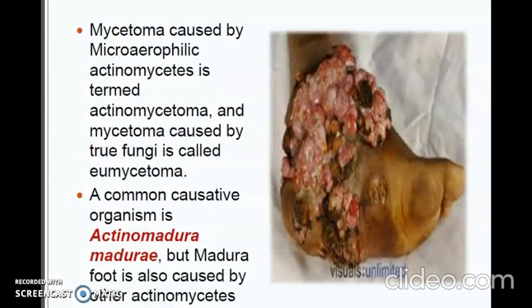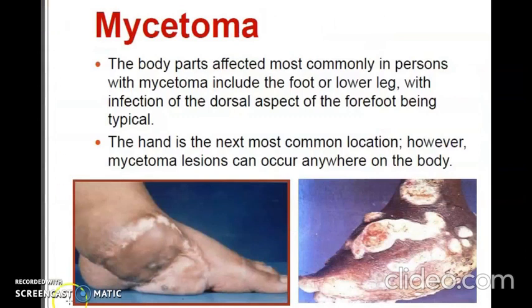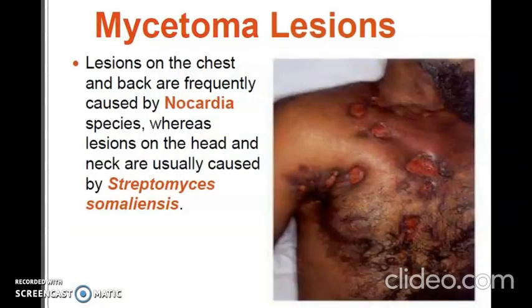Mycetoma caused by microaerophilic actinomycetes is termed actinomycetoma and mycetoma caused by true fungi is called eumycetoma. The most commonly affected part is the foot or lower leg, with infection of the dorsal aspect of the forefoot being typical. The hand is the next common location. However, mycetoma lesions can occur anywhere on the body. Lesions on the chest and back are caused by Nocardia species whereas lesions on the head and neck are usually caused by Streptomyces somaliensis.